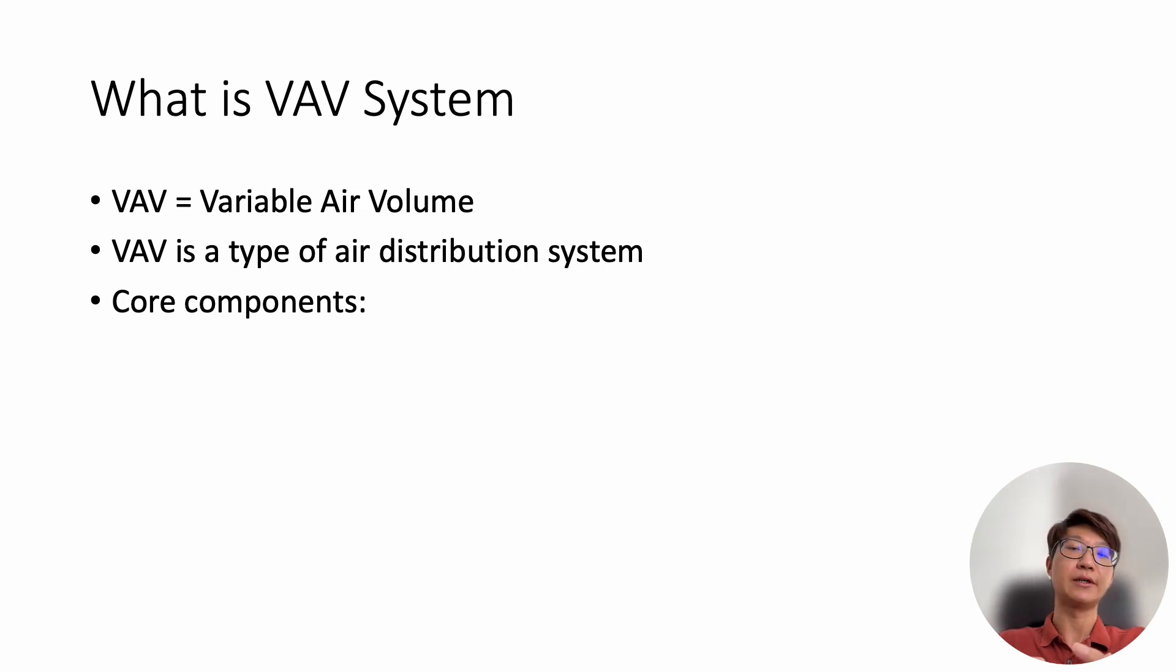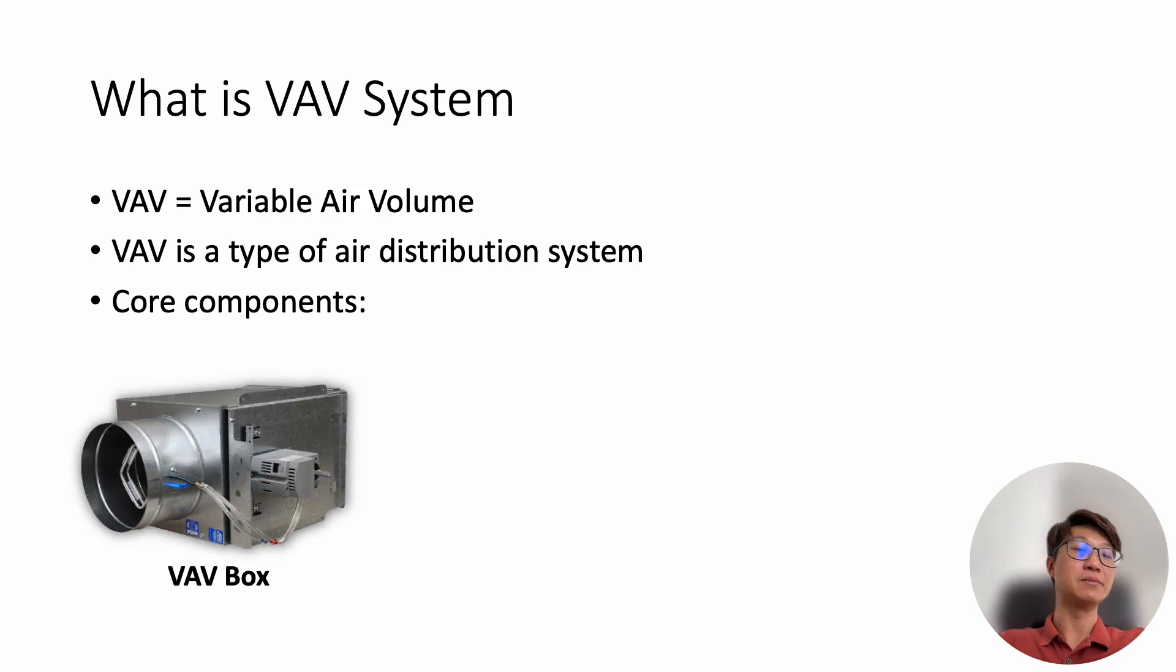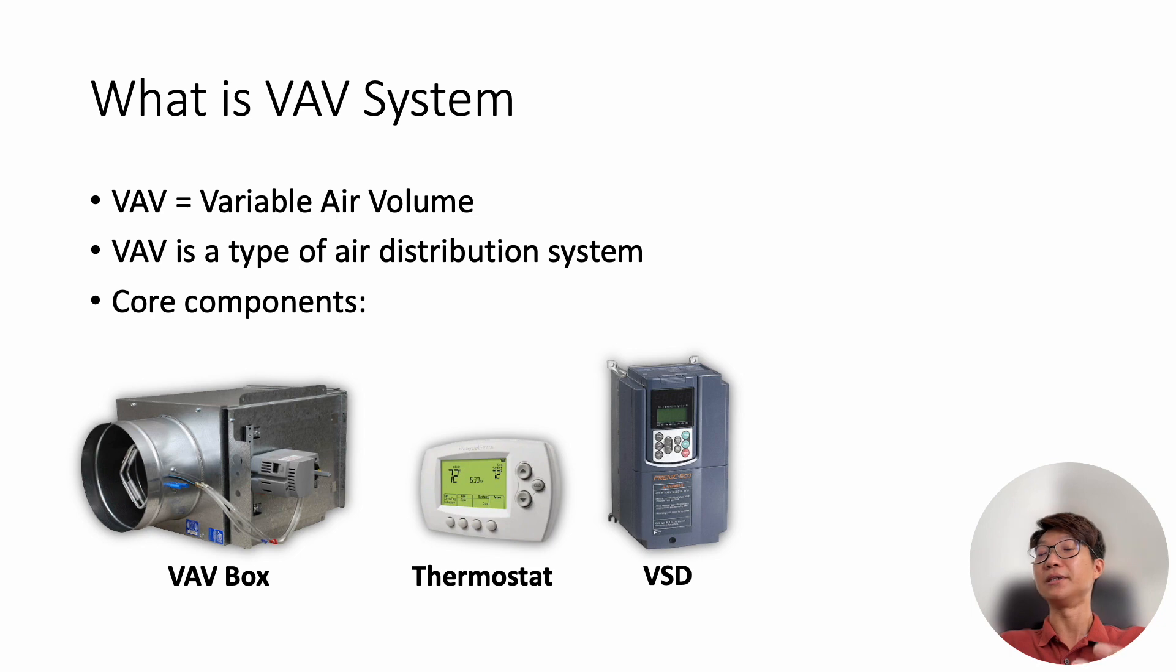So the core components of a VAV system is of course, first thing is the VAV box itself. Then the second component is the thermostat. Then we have the variable speed drive or the variable frequency drive, VFD. Then we have the differential pressure sensor or transmitter, the DPS.